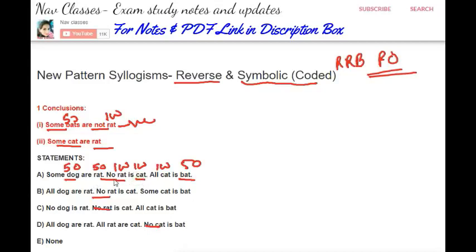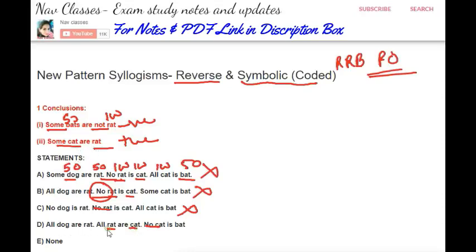For the next conclusion, 'some cat are rat' — this is positive. But there is no positive relationship between cat and rat in the available statements; the relation is negative. So it cannot be possible. The next statement says 'no rat is cat' — again we deduct this because we require a positive relation between cat and rat. In statement D, 'no cat is bat' and 'all cat are rat' — this is positive. With 50 for cat and 100 for rat, can they give 50 out of 150? Yes. So this conclusion is satisfied from statement D.